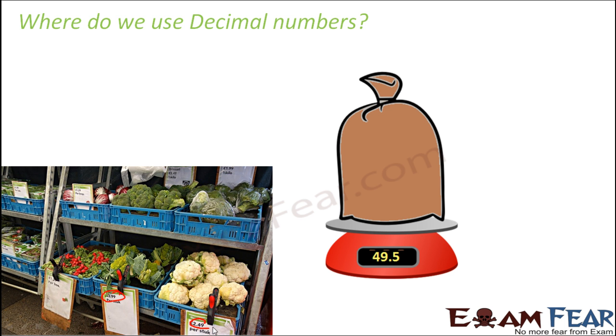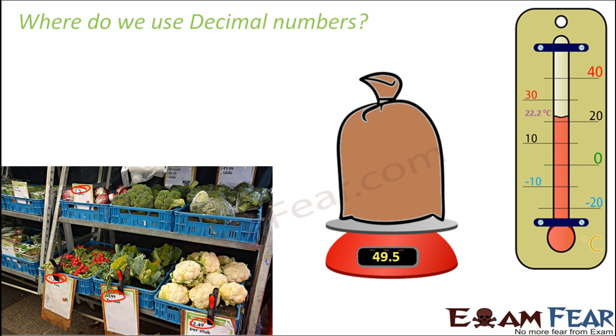When you look at the price tags closely, you see 2.49, 1.5, 3.5, and so on. That is another place where you see decimal numbers. Look at the thermometer, when you look at the temperatures. Let's say the marking is 20 and then 30, but your level is somewhere here. So how do you read it? It is nothing but 22.2 degrees Celsius. So these are some of the places where we actually come across decimal numbers.